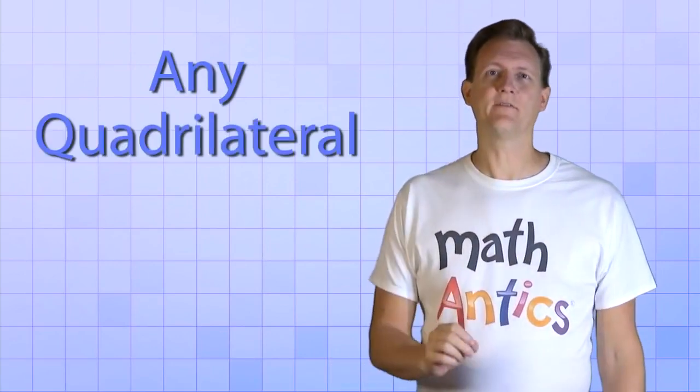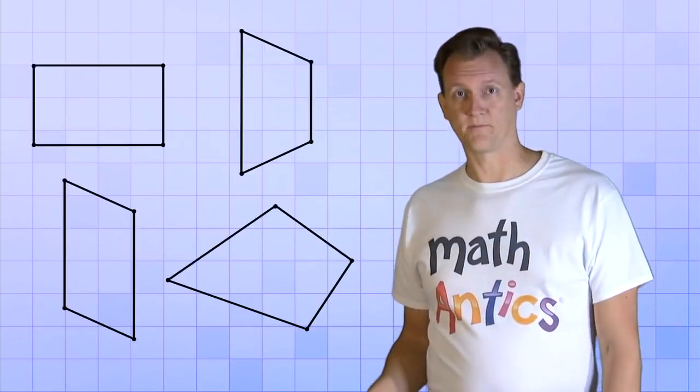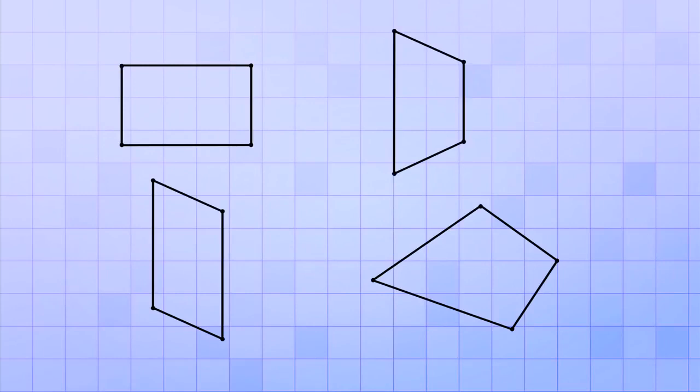But to see that it's also true for any quadrilateral, let's have a look at these four different examples. Watch what happens when we draw a line on each of them between a pair of opposite vertices. Each of the quadrilaterals got divided into two triangles.